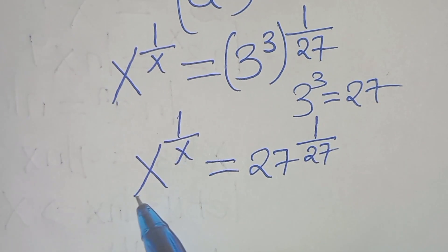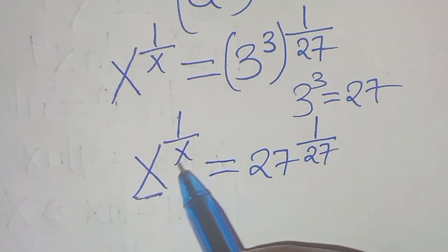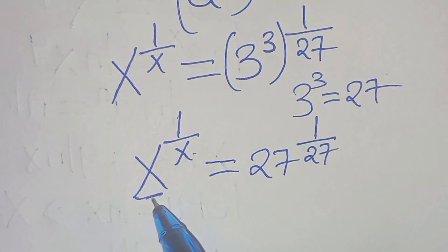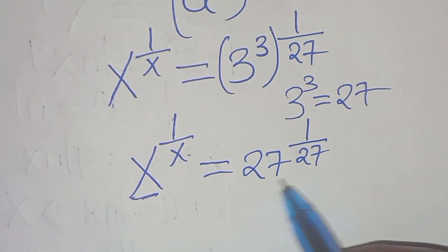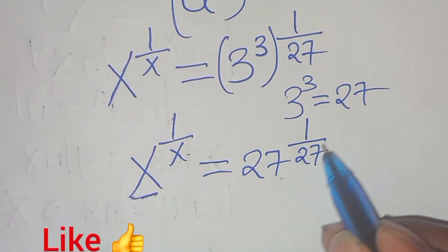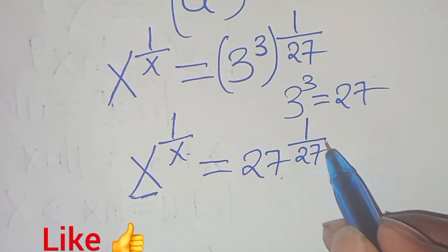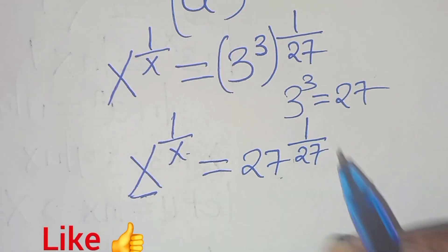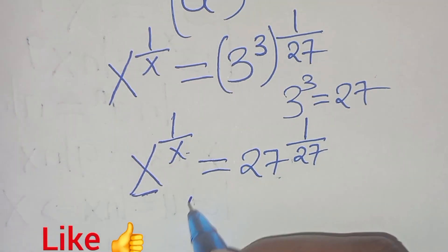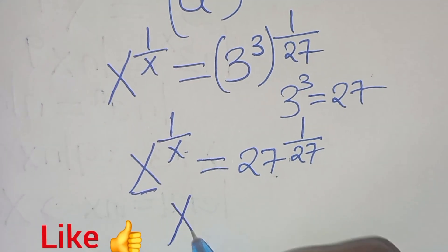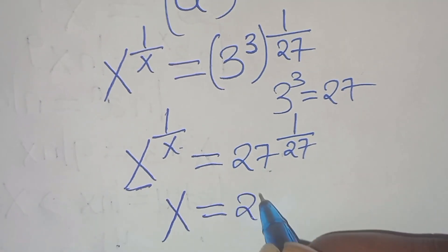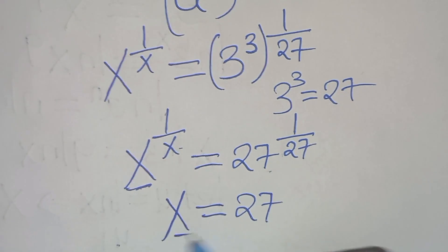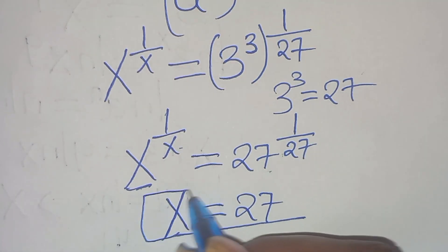Checking the base and exponent: x matches the base, and the exponent 27 matches the exponent on the right-hand side. This implies that the value of x is equal to 27.